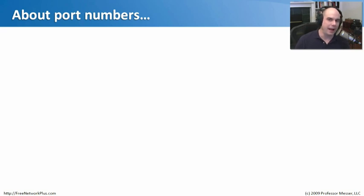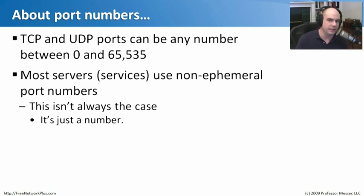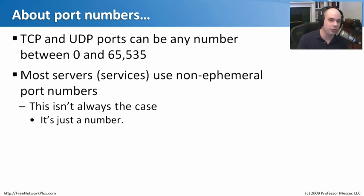A TCP or UDP port number is simply any number between 0 and 65535. Port number 0 usually isn't used very often, but it is a legal port number. These port numbers are used to communicate to a service on another machine. Most servers like web servers will use non-ephemeral port numbers, but they don't have to. Port 80 is just a number we've all agreed upon — if you wanted to put your web server on port 79, you could do that.